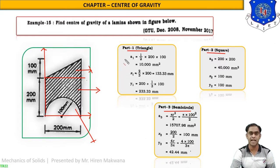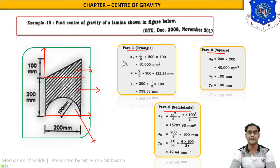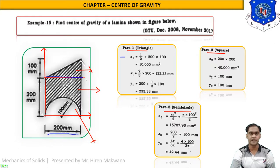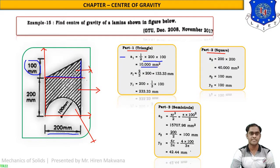Starting with the triangle: the base is 200 mm and the height is 100 mm, so the area is one-half × base × height = 10,000 mm².